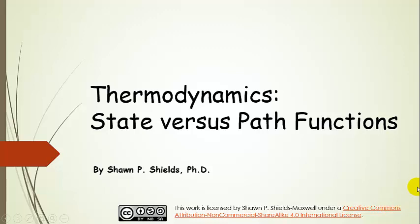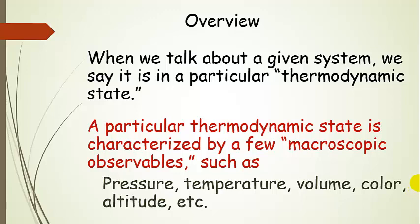State versus path functions in thermodynamics. Let's continue our discussion of thermo. When we talk about a given system, we're going to say it's in a thermodynamic state. This discussion is going to help us understand what that means. For a given system, the thermodynamic state is characterized by some macroscopic observables that we can measure — things that we can actually see that are macroscopic.